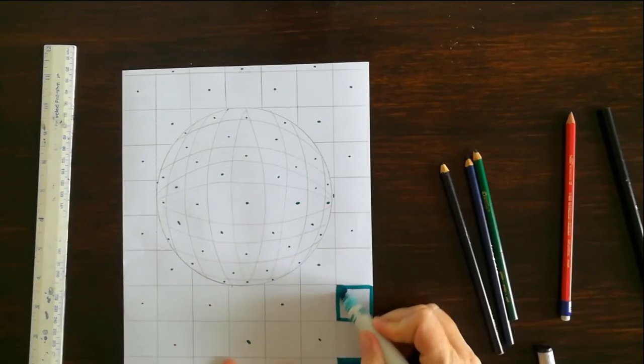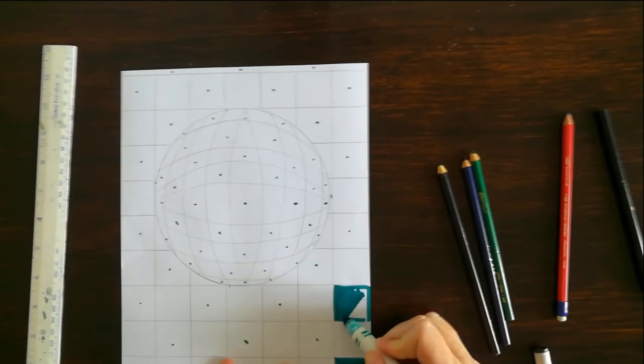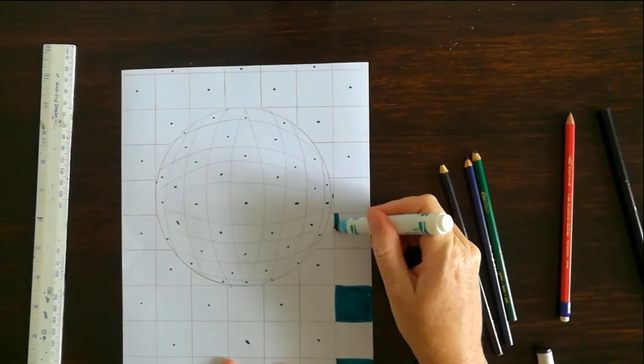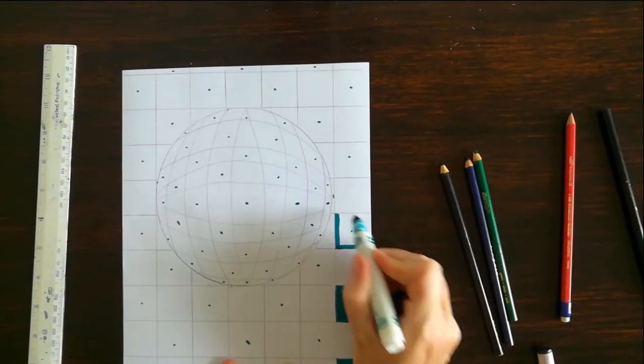When I color with markers, I like to use the side of the marker and I like to go around the box and then back and forth. And it just fills it in nicely.